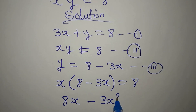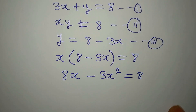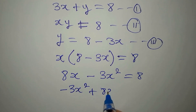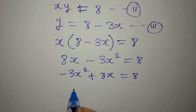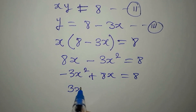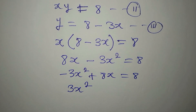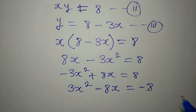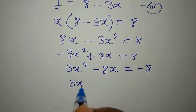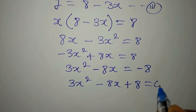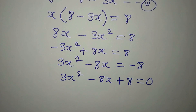From here we have just one unknown, x. Opening the bracket gives minus 3x squared plus 8x equals 8. We want to remove the negative leading coefficient, so we multiply everything by minus 1, giving us 3x squared minus 8x plus 8 equals 0. Now we have a quadratic equation.